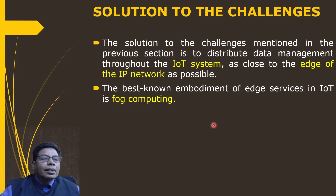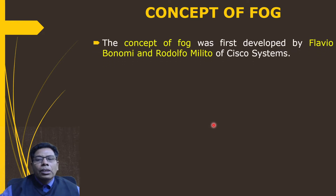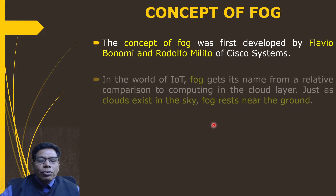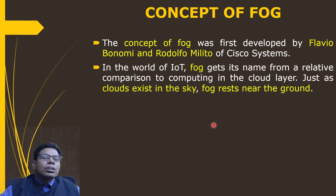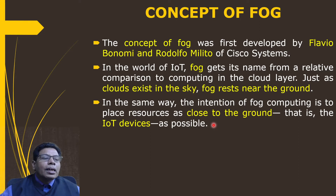The concept of fog was first developed by Flavio Bonomi and Rodolfo Milito of Cisco Systems. In the world of IoT, fog gets its name from a relative comparison to computing in the cloud layer. Just as clouds exist in the sky, fog rests near the ground. The intention of fog computing is to place resources — compute and data management — as close to the ground as possible, that is, into the IoT device.